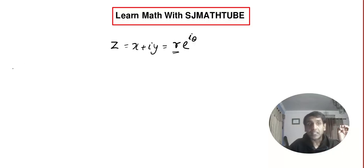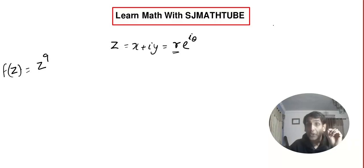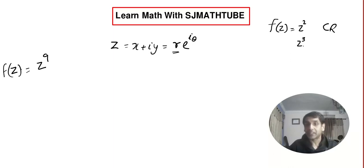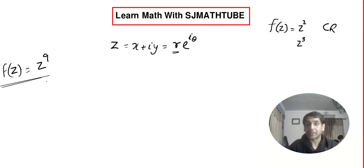Imagine we have a problem like f(z) = z^9. We proved that f(z) = z² is analytic using the CR equation. We even proved that f(z) = z³ is analytic. But in your exam, imagine they ask you to prove that f(z) = z^9 is analytic. I will guarantee that you will not like the Cartesian method.